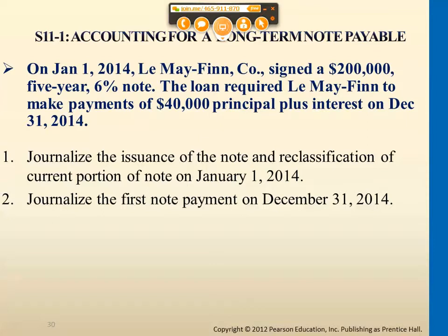For the first entry, how do we journalize this? We have an issuance entry and a reclassification entry. For debits and credits: we debit cash because we're receiving it, and we credit long-term notes payable. For the reclassification, we reclassify the part worth $40,000 — because every single year we're paying $40,000. So the reclassification represents the current portion of long-term notes payable.